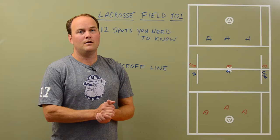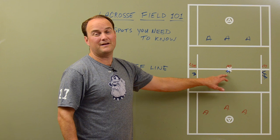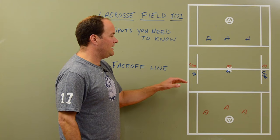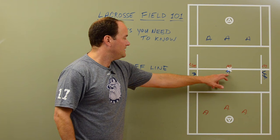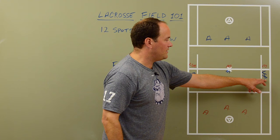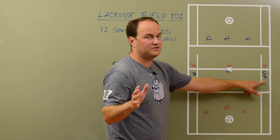The next spot on the field is the faceoff line. The faceoff X is in the middle of the field — it's where faceoffs occur after goals and at the beginning of each quarter. The faceoff line is the white line 10 yards from the sideline and 20 yards from the midpoint of the field. Each team has a faceoff man — known as a FOGO, faceoff get-off — a short stick midfielder, and a long stick midfielder. We could do a whole separate video just about wing play, and we probably will.